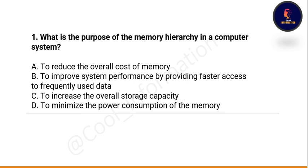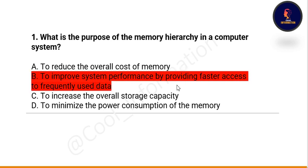The first question is: what is the purpose of the memory hierarchy in a computer system? Option A: to reduce the overall cost of memory. Option B: to improve system performance by providing faster access to frequently used data. Option C: to increase the overall storage capacity. Option D: to minimize the power consumption of the memory. The correct option is B — to improve system performance by providing faster access to frequently used data.